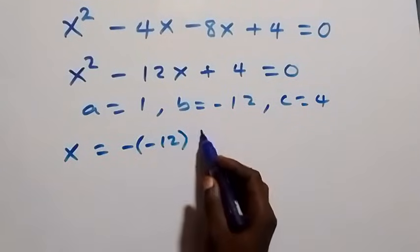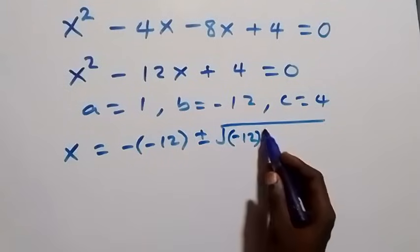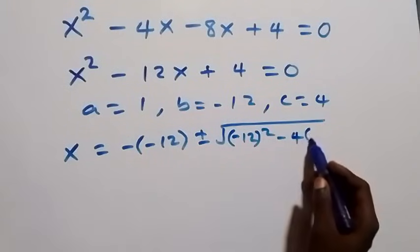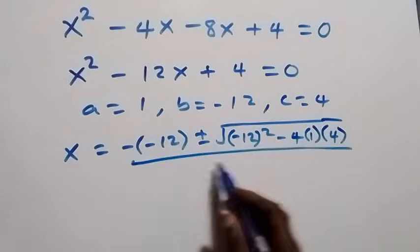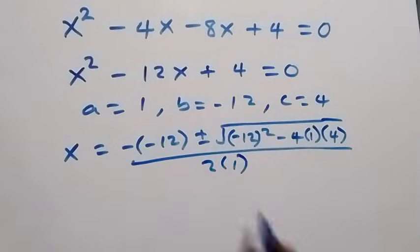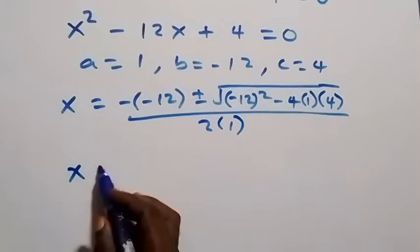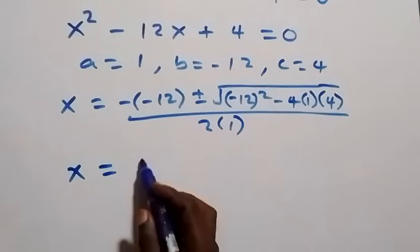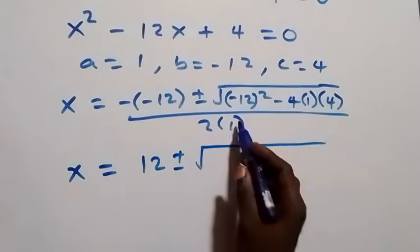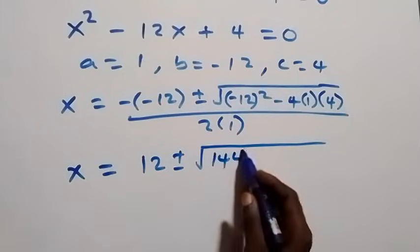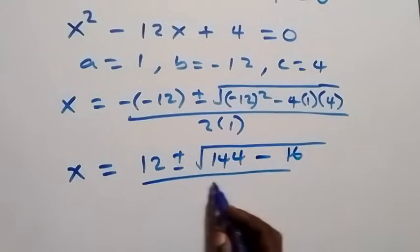That is: x equals 12 plus or minus square root of minus 12 squared, minus 4 times 1 times 4, all over 2. Simplifying: minus 12 squared is 144, minus 16, over 2.